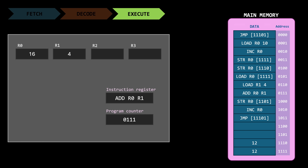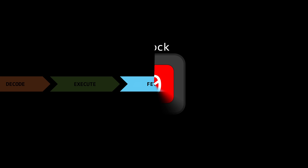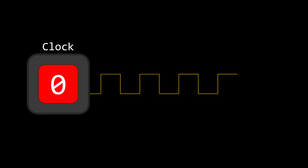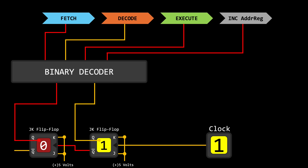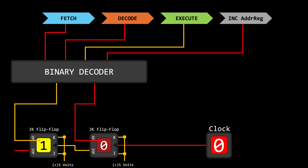But the question that often puzzles people is: how does the computer know to first fetch, then decode, then execute, and repeat this process in that order over and over again? The simplest answer is the clock — a little device that produces an oscillating signal which, working in concert with a few logic gates, orchestrates the computer's step-by-step progression through each instruction.